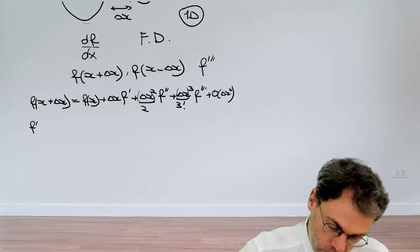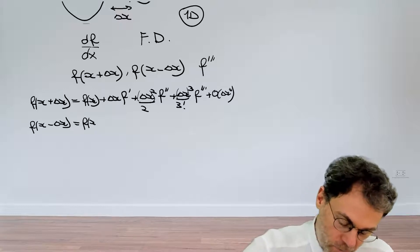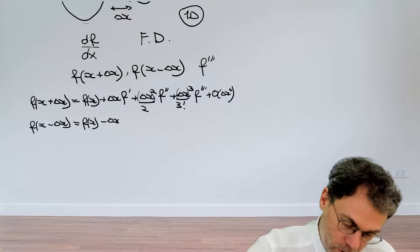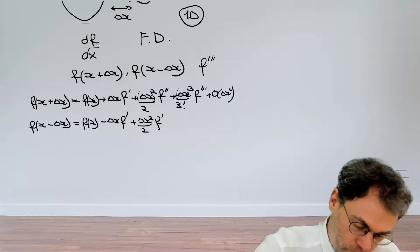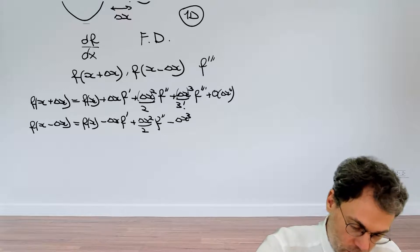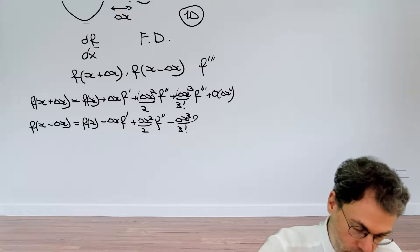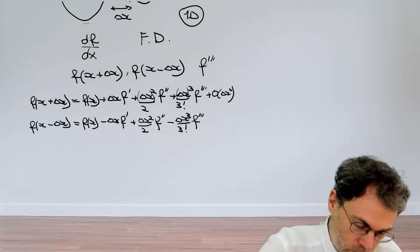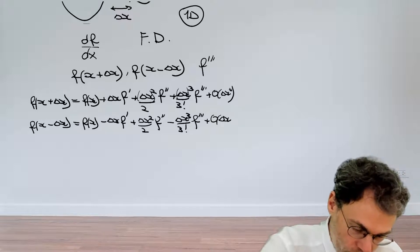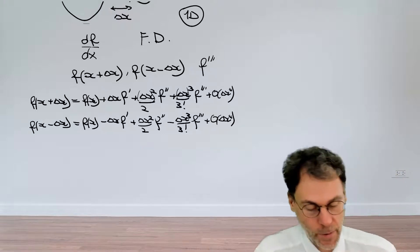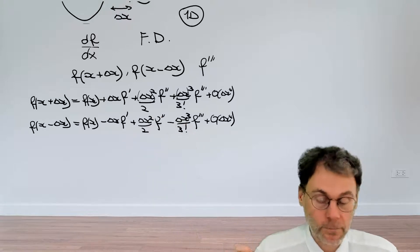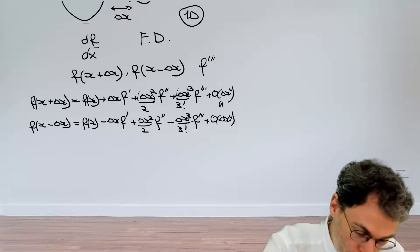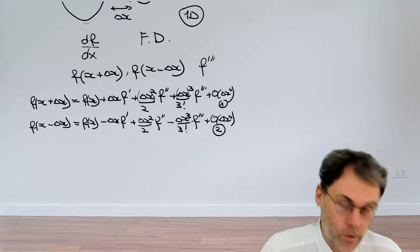Now let's do the same thing for the other side: f(x − Δx). That's going to be the same formula but with some minus signs thrown in — for example on the f'(x) term. So now we have two equations to work with: equation 1 for f(x + Δx) and equation 2 for f(x − Δx). These will help us calculate finite difference approximations to the derivatives.